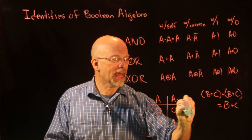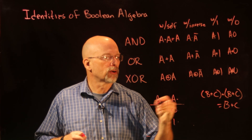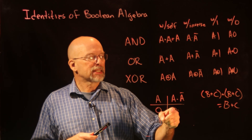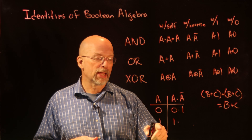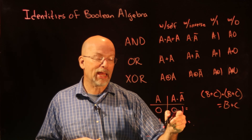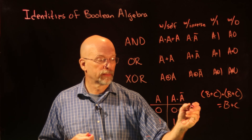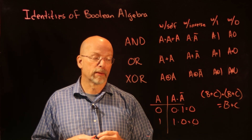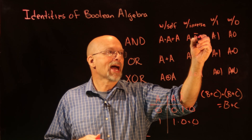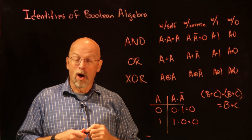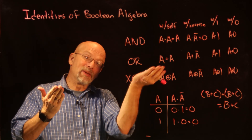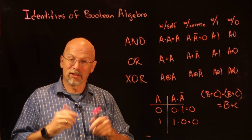What happens when you AND something with its inverse — a AND a-bar? When a is 0, a-bar is 1, so 0 AND 1 equals 0. When a is 1, a-bar is 0, so 1 AND 0 equals 0. Any time you AND something with its inverse, that equals 0, because there's no way to have 1 AND 1 if the 1 is being inverted to a 0.